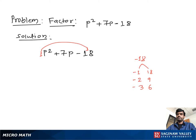On addition, this pair gives positive 7. So you can see minus 2 and 9. We can write P squared minus 2P plus 9P minus 18. From this pair, we take P as common.